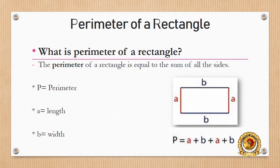Perimeter of a rectangle. What is perimeter of a rectangle? The perimeter of a rectangle is equal to the sum of all the sides. You know sum means to add.